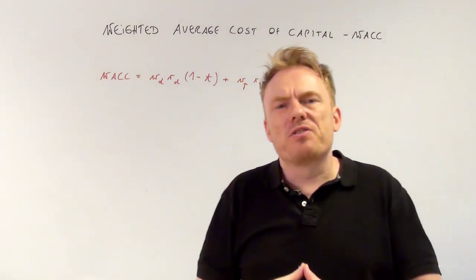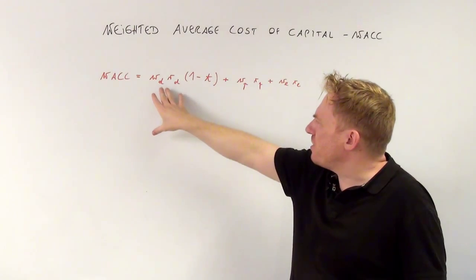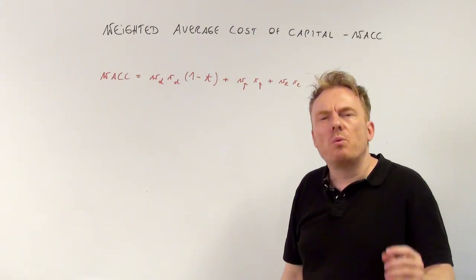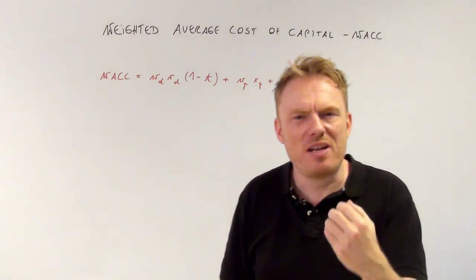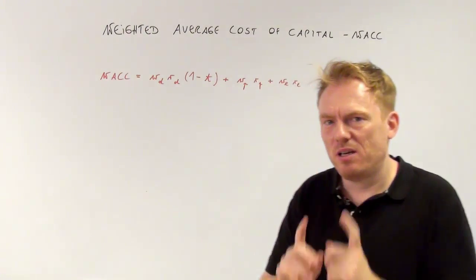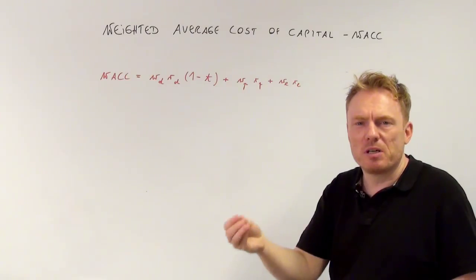t equals the tax rate because this interest is tax deductible whereas the money coming from owners is not tax deductible. This is a very important difference between money coming from bondholders and money coming from owners.